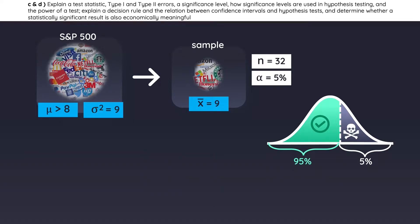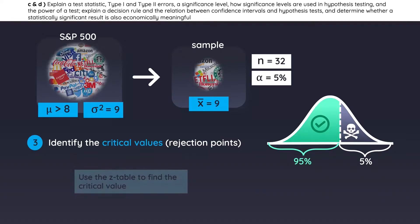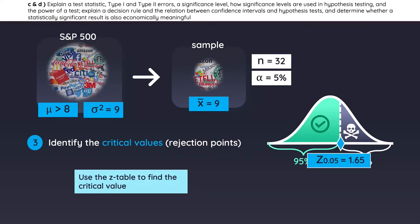Step 3 is to identify the critical value. In this case, we will find it using the z-table, because the population variance is known and assumed to be normal. If you don't remember how or when to use a z-table, you can go back to the reading titled Common Probability Distributions. The z-table gives you a critical value of 1.65.